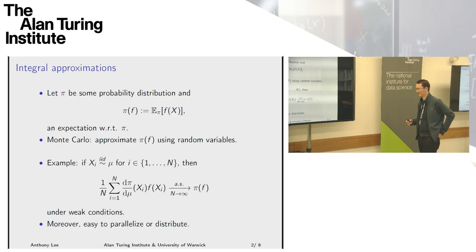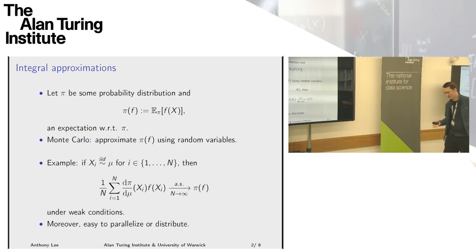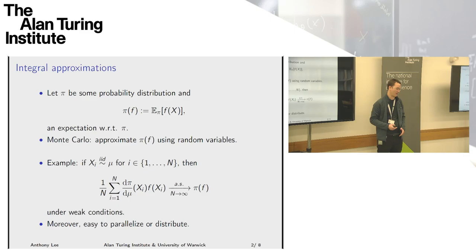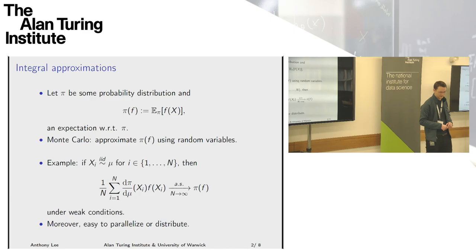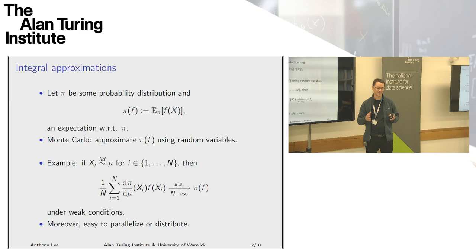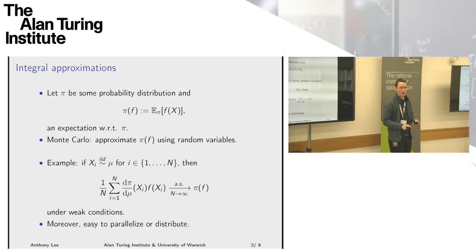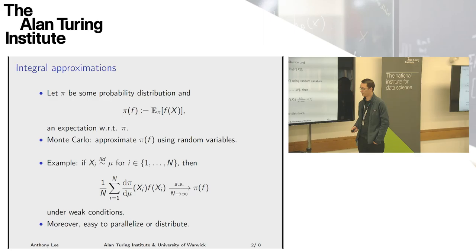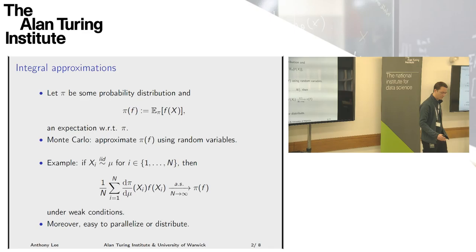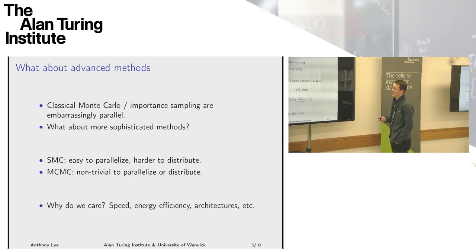That's a very basic approach — this is like 1940s — but one thing people have already pointed out in the context of today's computational landscape is that this is very easy to parallelize or distribute. For this talk, I'd like to distinguish between algorithms that you can parallelize and algorithms that you can distribute. When I say parallelize, I mean on a shared memory machine with lots of cores, such as a GPU or many-core CPU. When I say distribute, I mean nodes connected over a network, where there's more cost to communication. This type of Monte Carlo approach — known as importance sampling or change of measure — is very easy to parallelize or distribute, so people are happy, but unfortunately it doesn't solve every problem.